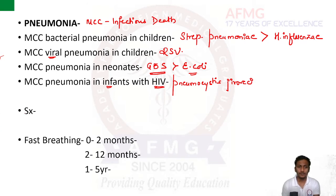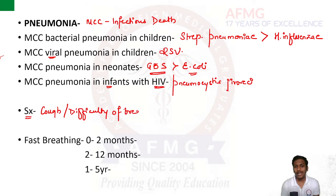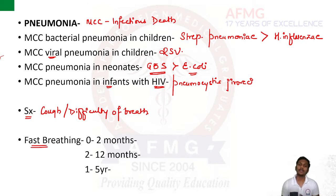Talking about symptoms: usually this begins with a prodromal period when the child may have low-grade fever. The most important symptoms are cough and difficulty in breathing. Some children will also have respiratory distress, which can manifest as fast breathing or tachypnea. In children already, there is an increased respiratory rate of around 40 to 60 breaths per minute.